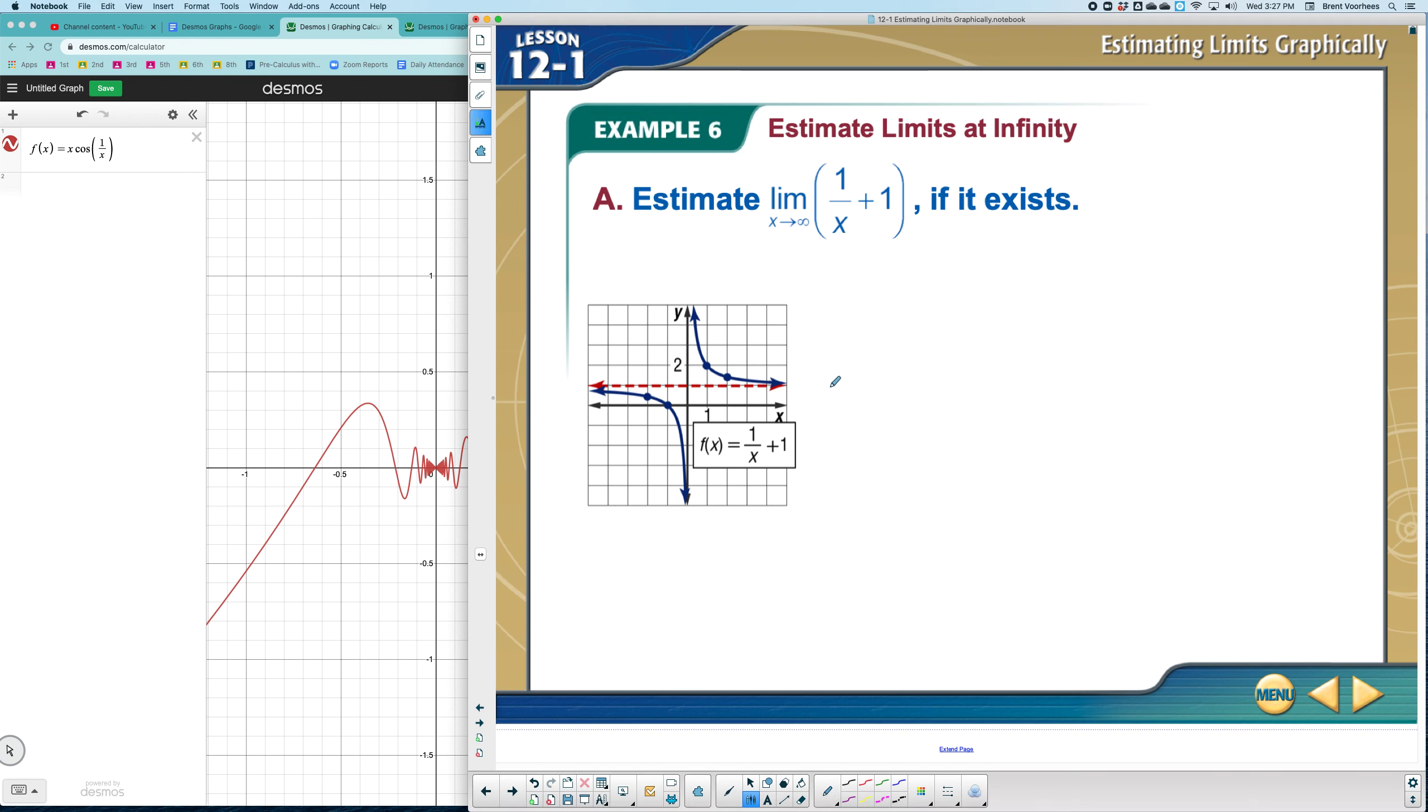So what's happening as this graph goes off the screen to the right? The answer is it's getting really, really flat. Remember that kind of question we were asking ourselves: is it going to go up forever, down forever, or come to a point or flat along a point or a number? In this case, it's flat.